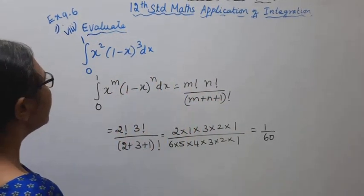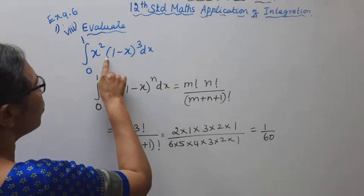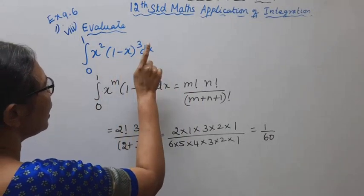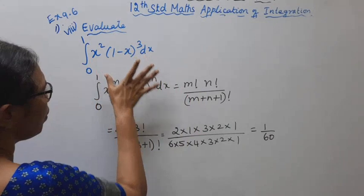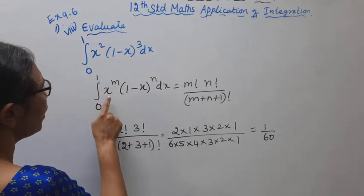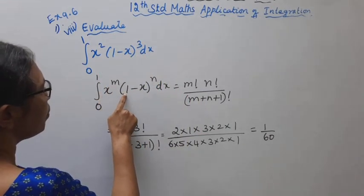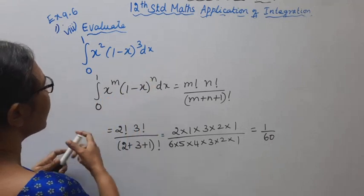Evaluate integration 0 to 1 x square 1 minus x to the whole power 3 dx. It is complete formula. Integration 0 to 1 x power m in bracket 1 minus x to the whole power n dx.